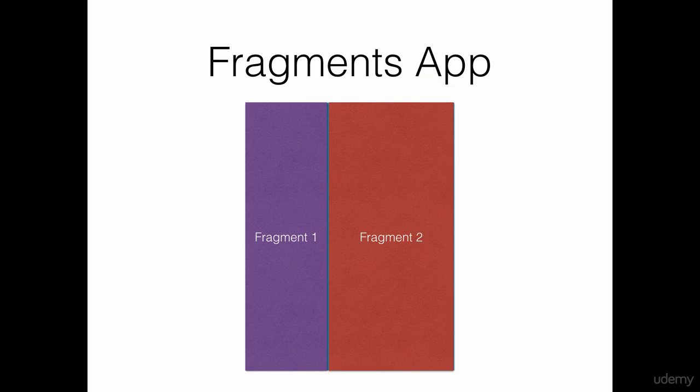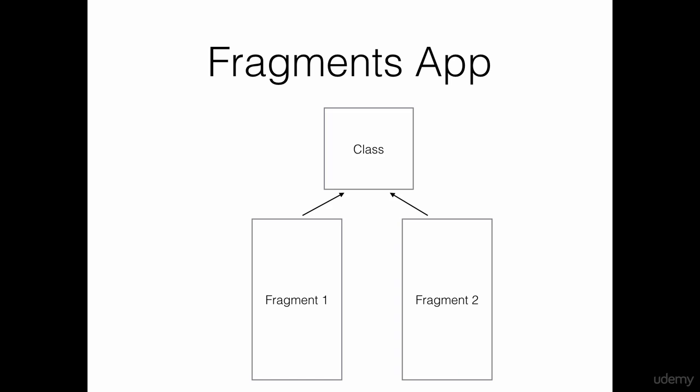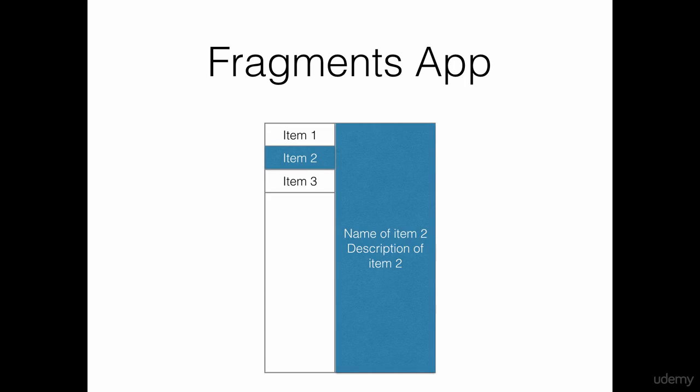The main activity is going to have fragment one and fragment two, so the main activity is entirely covered by these two fragments. Fragment one and fragment two are going to take data from a single class which we are going to make. As far as the app is concerned, on the left-hand side we are going to have three items, and whenever you select the first item, the second fragment displayed in blue is going to show the name and description of item number one.